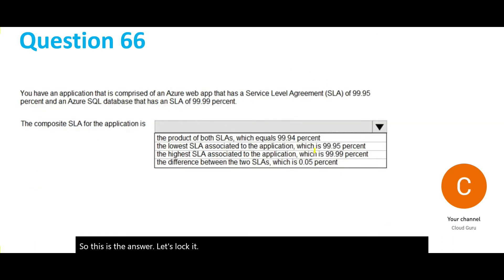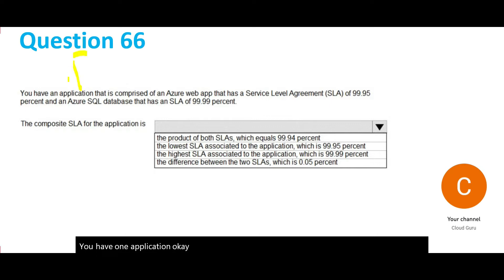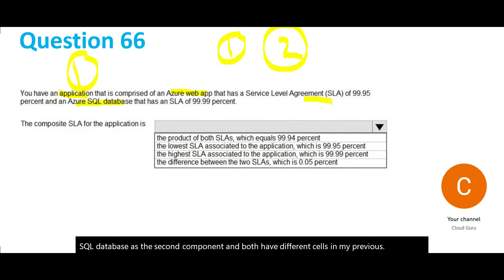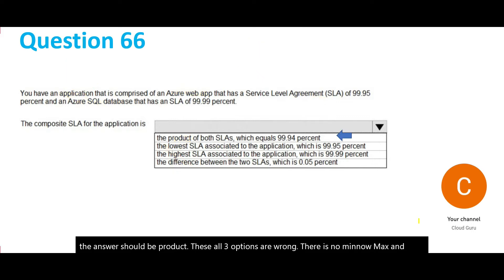The next question: you have one application with two components — Azure Web Apps and Azure SQL Database — and both have different SLAs. The calculation always uses the product of the two SLAs. All three other options — minimum, maximum, and difference — are wrong. The calculation always considers the product. Let's lock this answer and move forward.